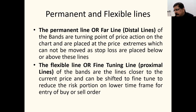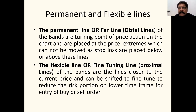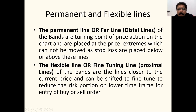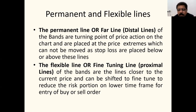Permanent and flexible lines: the permanent line is called the distal line — the far line of the band, either the high of a resistance or the low of a support. Bands are turning points placed at price extremes and cannot be moved; stop losses are placed below or above these lines. The flexible line or fine-tuning line is the proximal line — closer to the current price — and can be shifted to reduce risk on a lower time frame for entry.